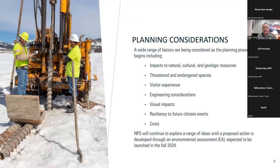Some of the things we consider as we've looked at these alternatives: what are the impacts to the resources of this park — natural, cultural, geologic? This is a heavy wildlife corridor from a migration perspective, whether you're talking elk, bison, bighorns, or others. We've got threatened and endangered species considerations. Visitor experience is important — the north entrance is the second busiest of the five entrances in the park, with up to 3,000 cars per day entering from Gardner at peak. It's a major entrance for people coming in from Montana.